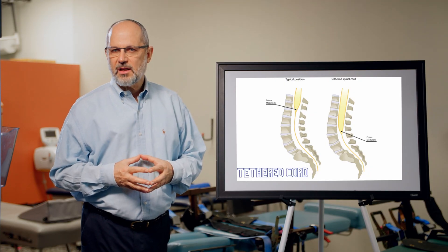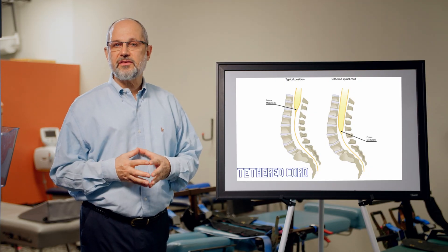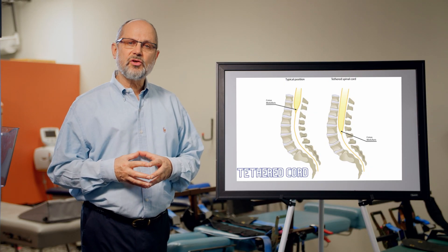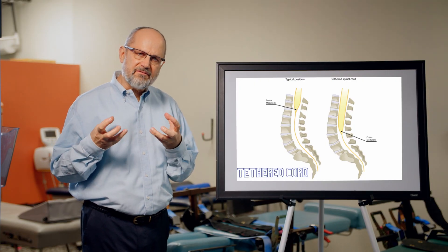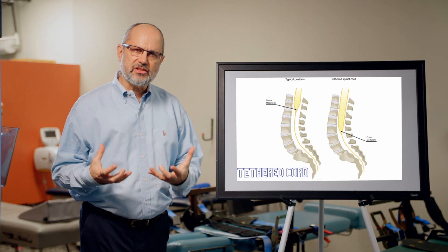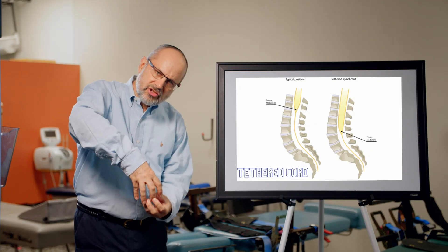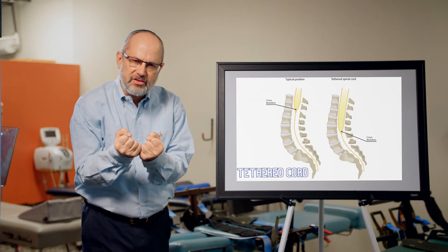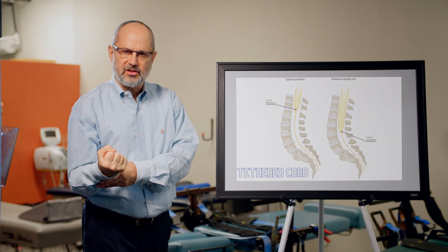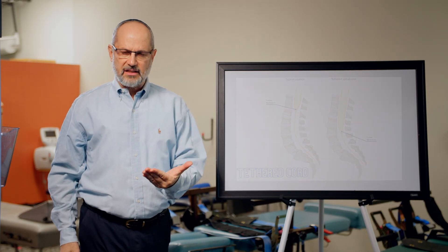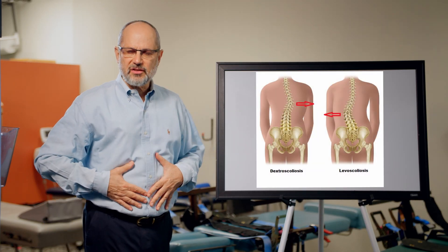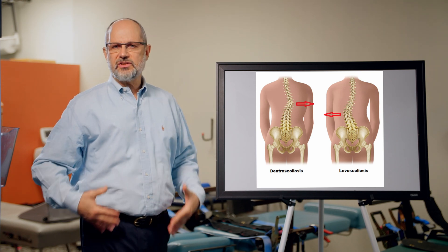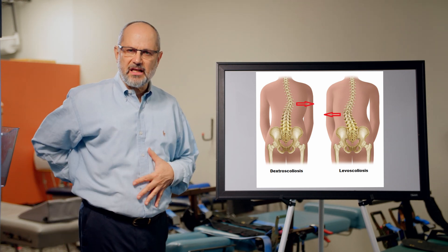The third thing that we're going to see possibly is tethering of the cord. Tethering of the cord indicates that the fibers of the nerve are stuck to the bones of the spine. So as the child is growing in height, because these nerves are adhered to the bones, it's going to pull the spine into the scoliosis and again we're going to see some symptoms like loss of the abdominal reflex, weakness in the legs, sometimes pain in the back.